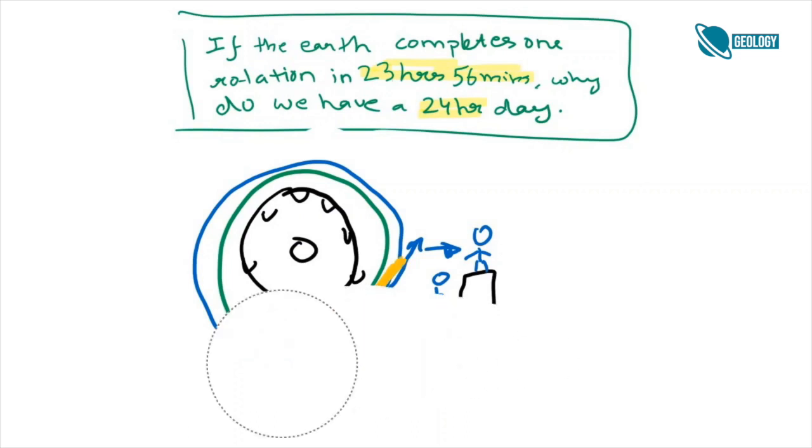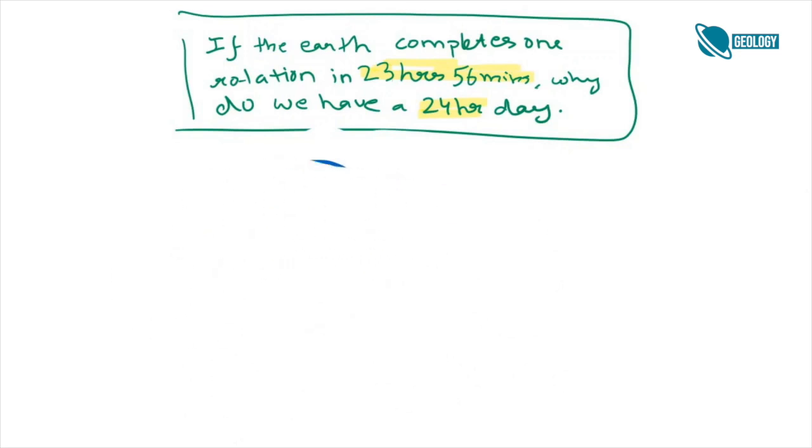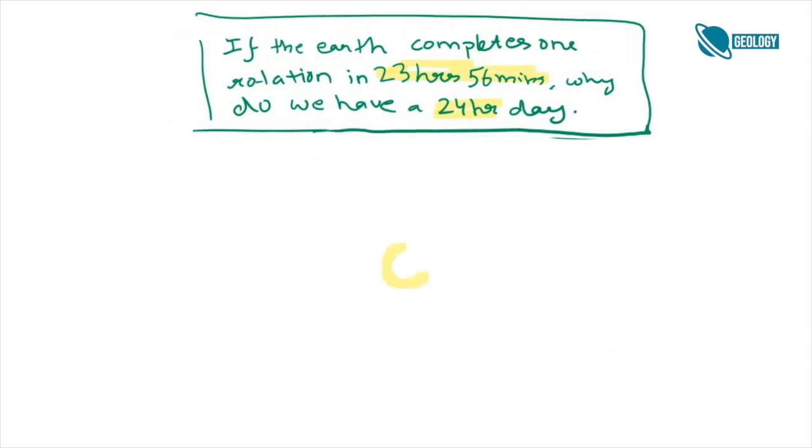Now if you want to measure the rotation period of the earth, we need some reference point again. Sun is an important reference point in the sky. So you can start your measurement when the sun is exactly overhead and wait for it to come overhead the next day. This is called the solar day.